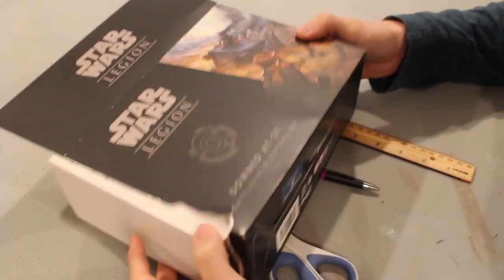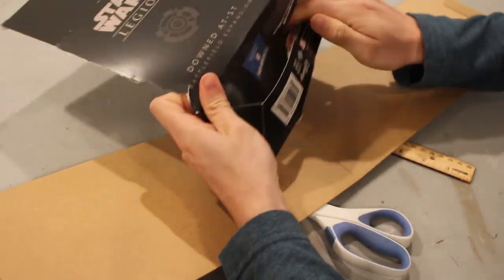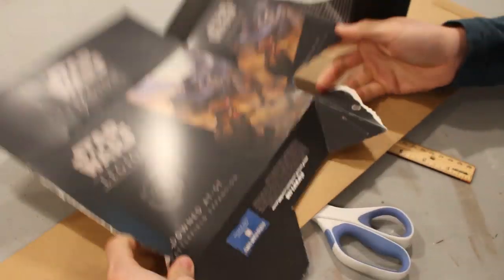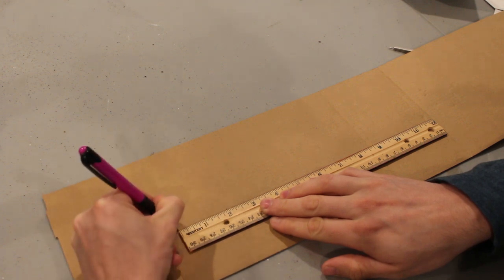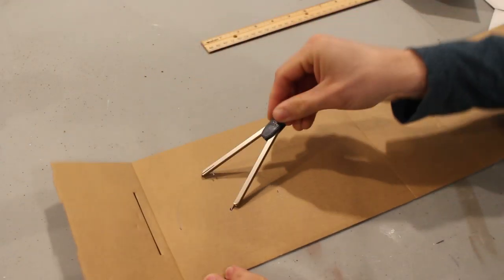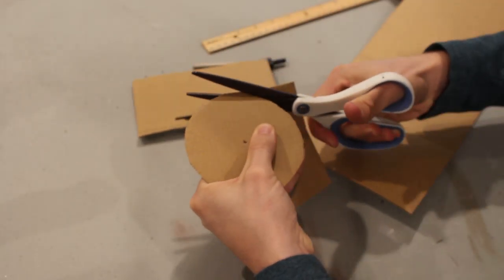To start pull apart an empty Legion box because we'll be using the thicker interior packaging as well as the thin exterior box. Starting with the interior cardboard we'll measure out a round platform. Ours will range from four to five inches in diameter but you should scale yours based on the size trees you plan to use.